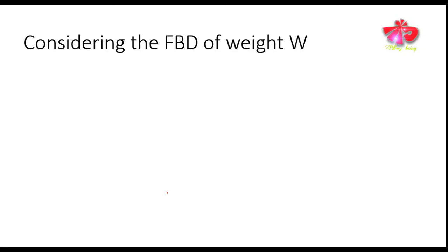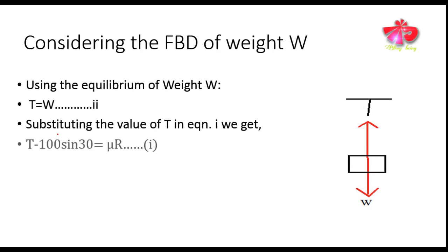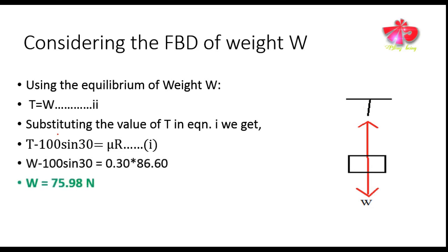Likewise, we consider the free body diagram of weight W. This weight will be acting vertically downward, and in the opposite direction the tension will be acting. We can easily write T equals W. Substituting T equals W into equation one, we can get the value of weight W as 75.98 Newton.